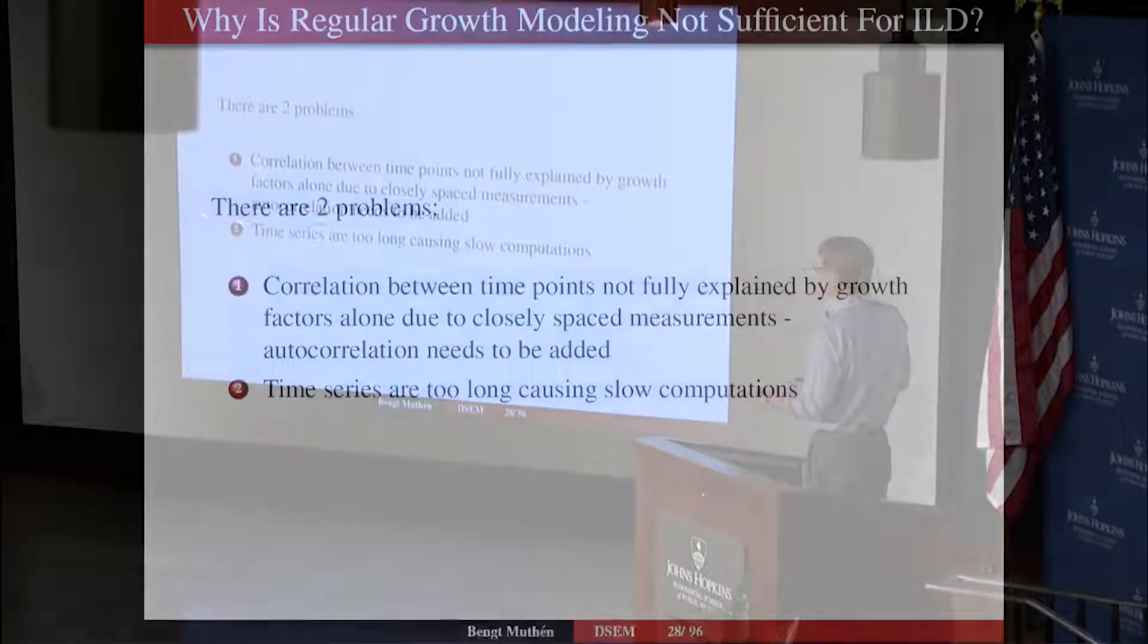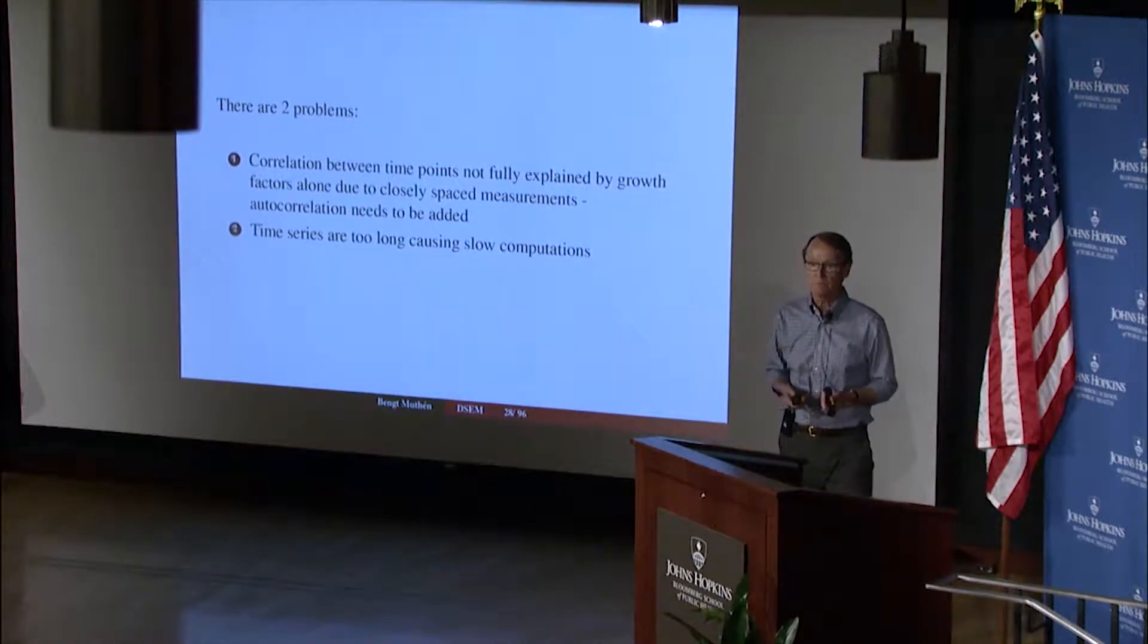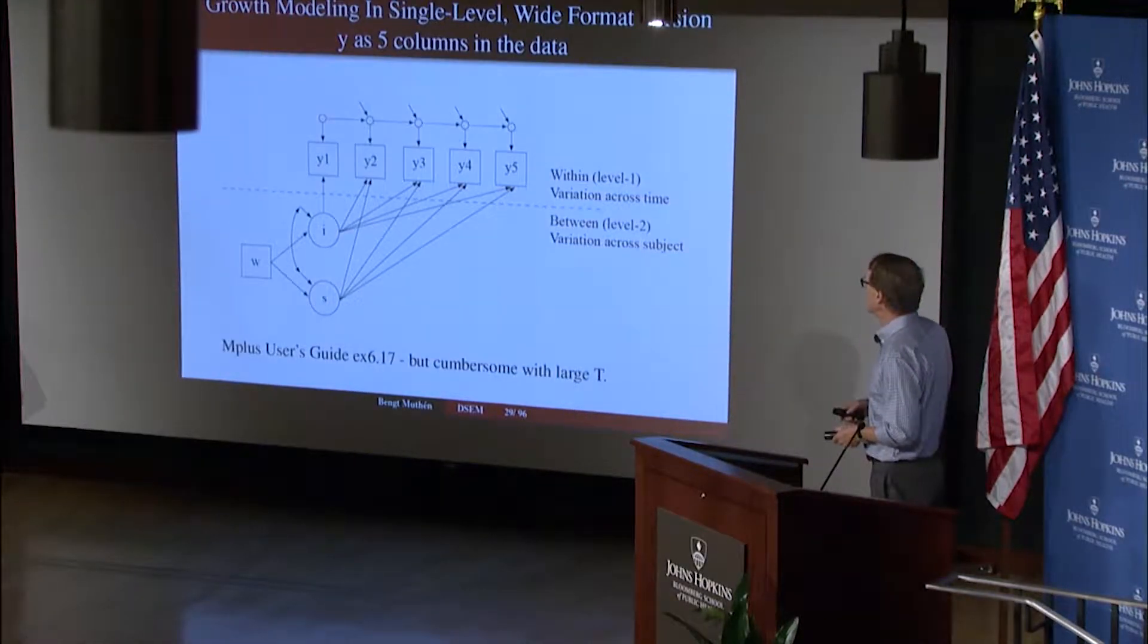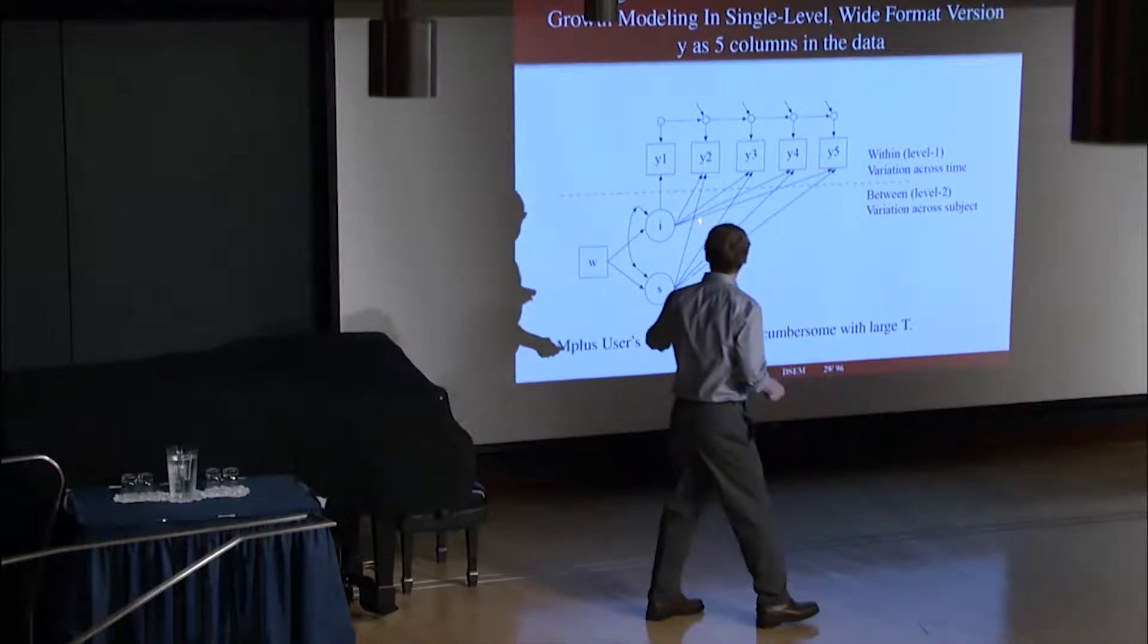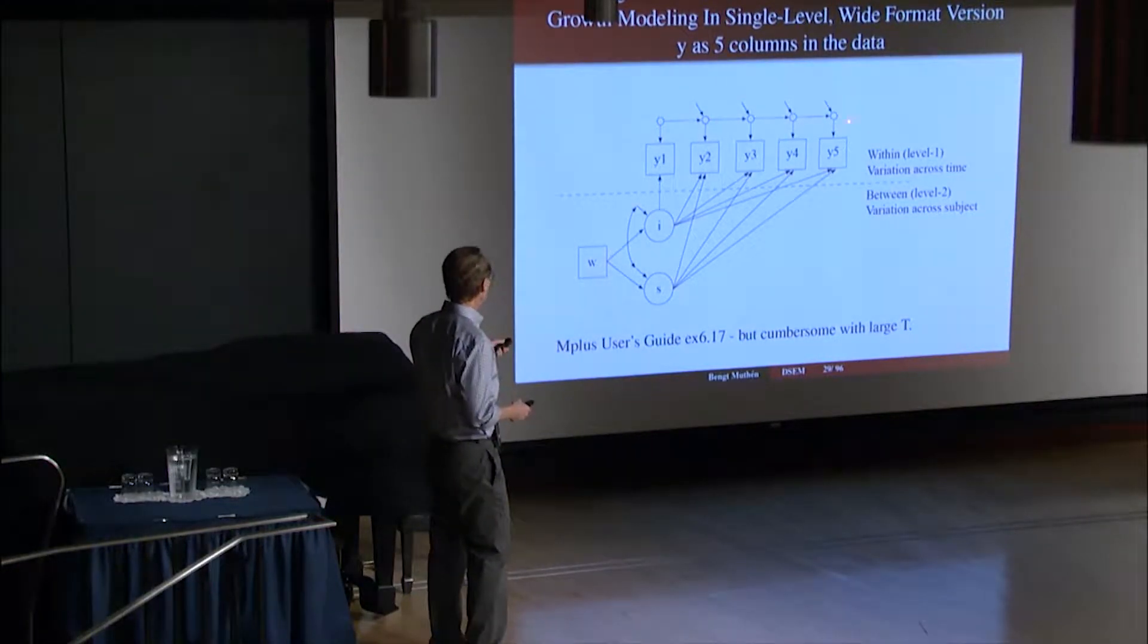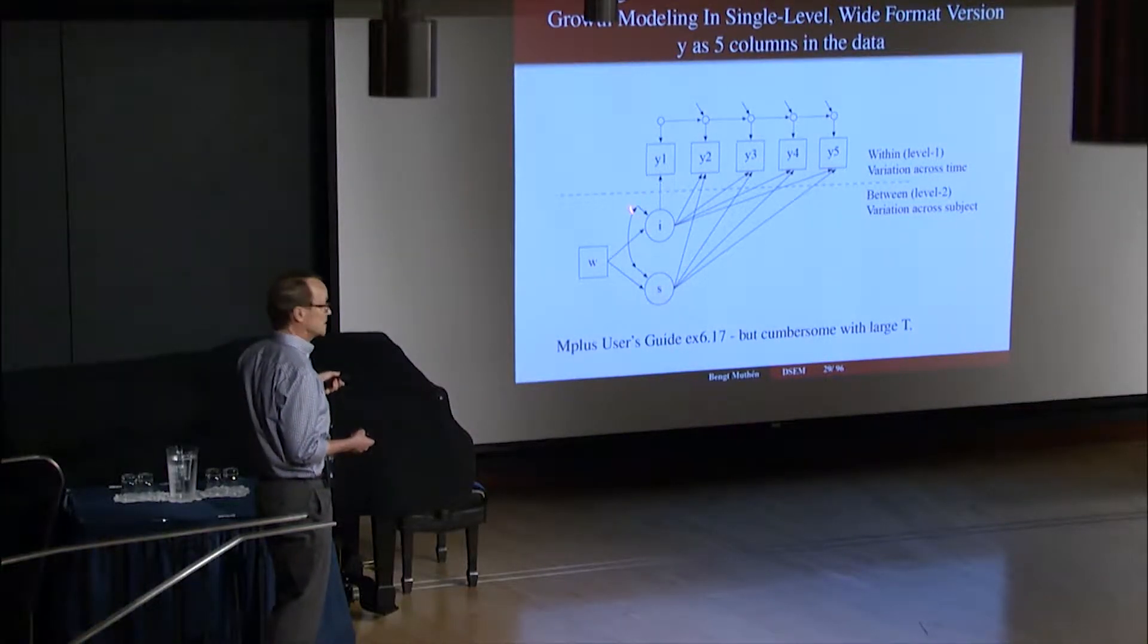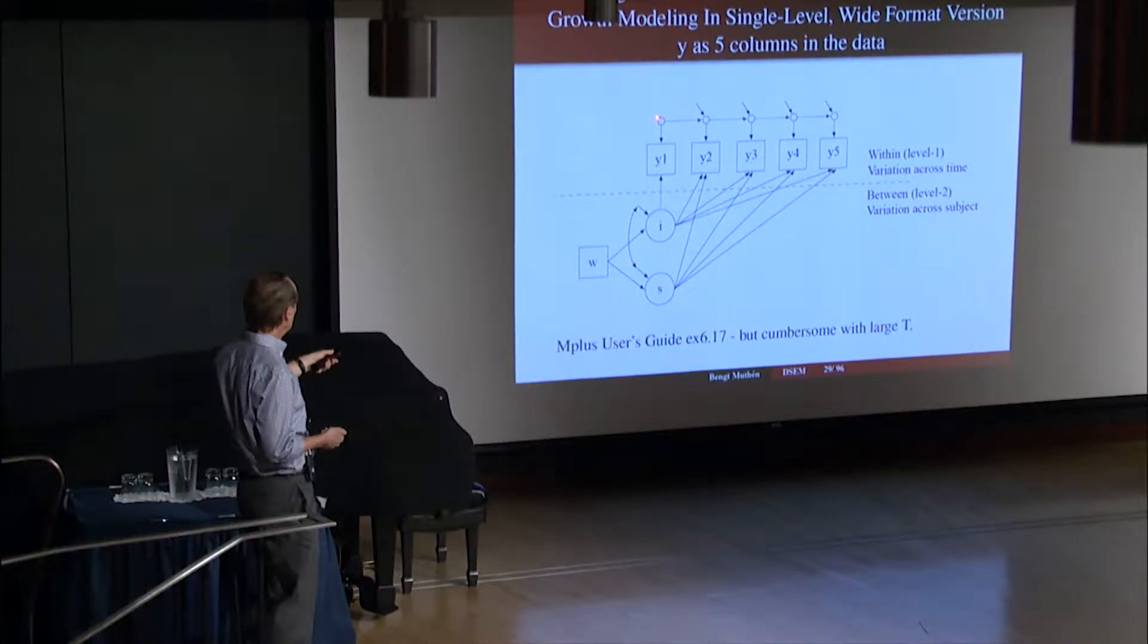The second problem is that the time series with ILD data are way too long for using the regular machinery for analysis that we use for growth modeling, causing too slow computations. Now you can solve problem number one by adding to the correlation that is explained by I and S. You add the correlations between the residuals across time. So here I've drawn a little circle for the residual—it is a latent variable, but we don't pay much attention to it, so we give it a smaller circle than these. But you can do this autoregression: the residual at time 2 is influenced by the residual at time 1 plus a residual on the residual.